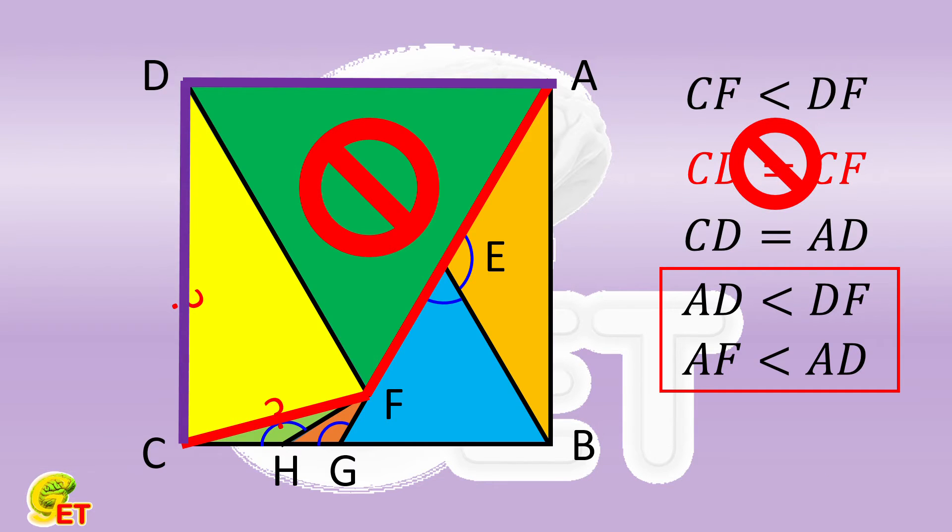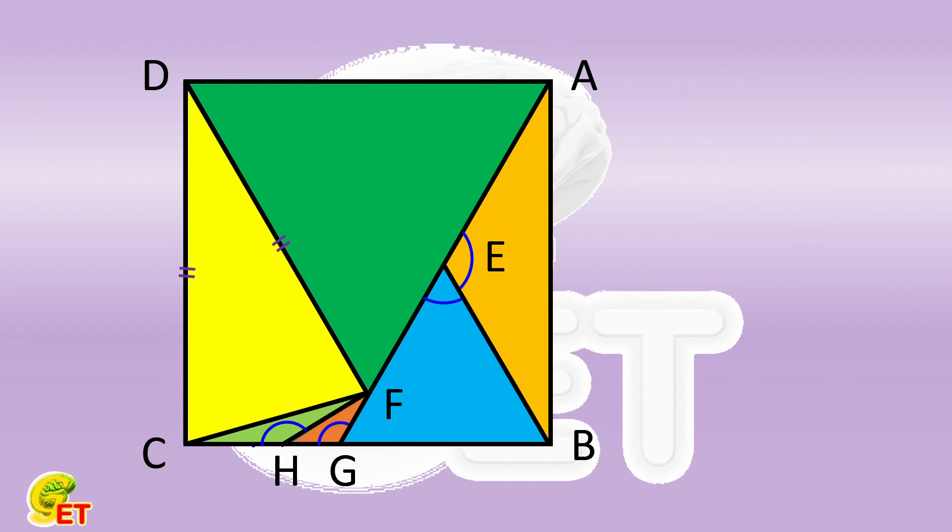The only possibility is then that CD is equal to DF. And the angle CDF is the vertex angle. In this case, AD is also equal to DF. So that in the triangle ADF the angle ADF is the vertex angle.